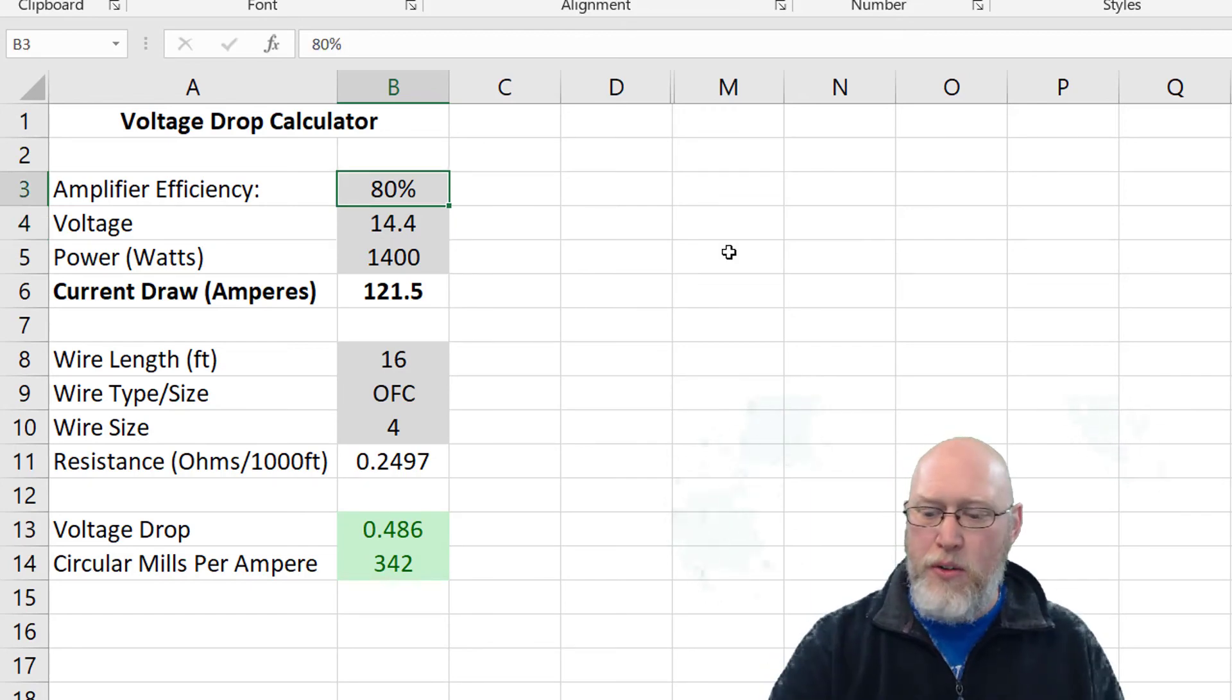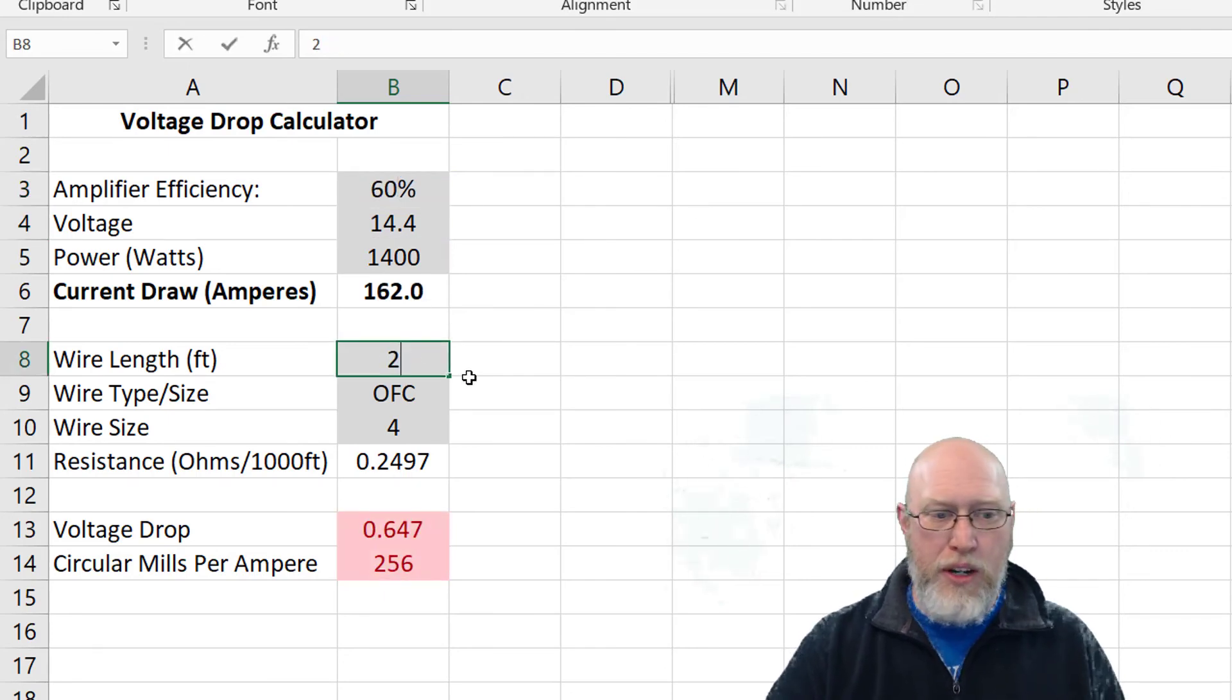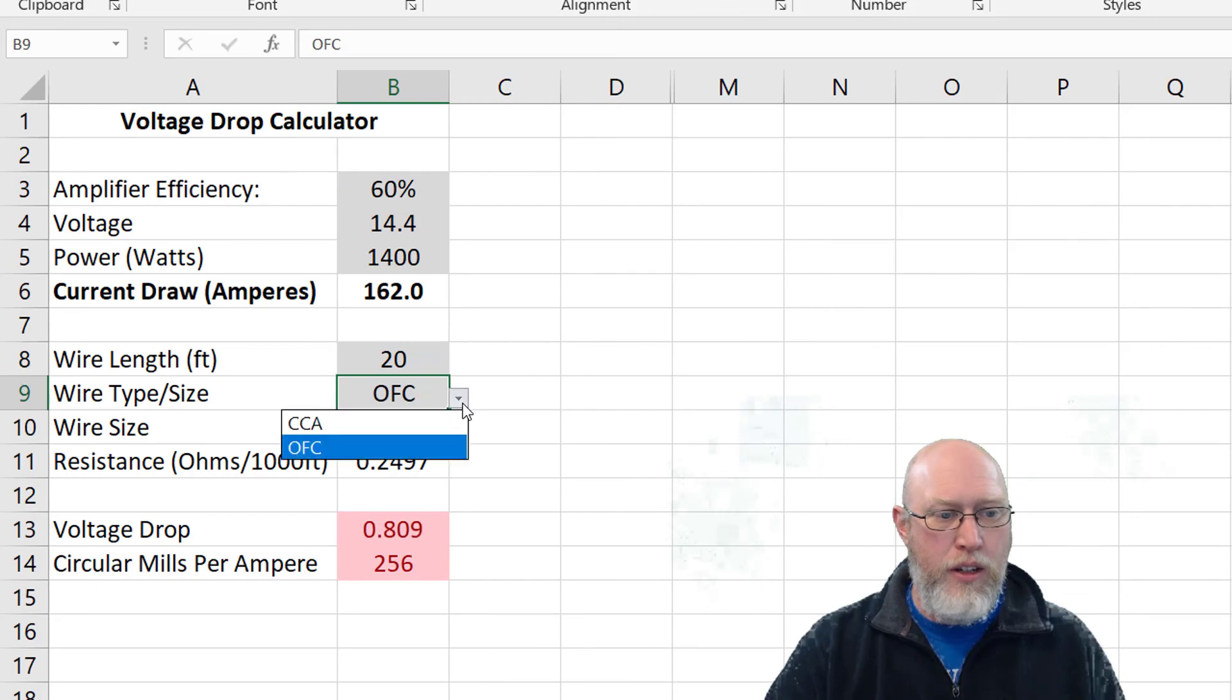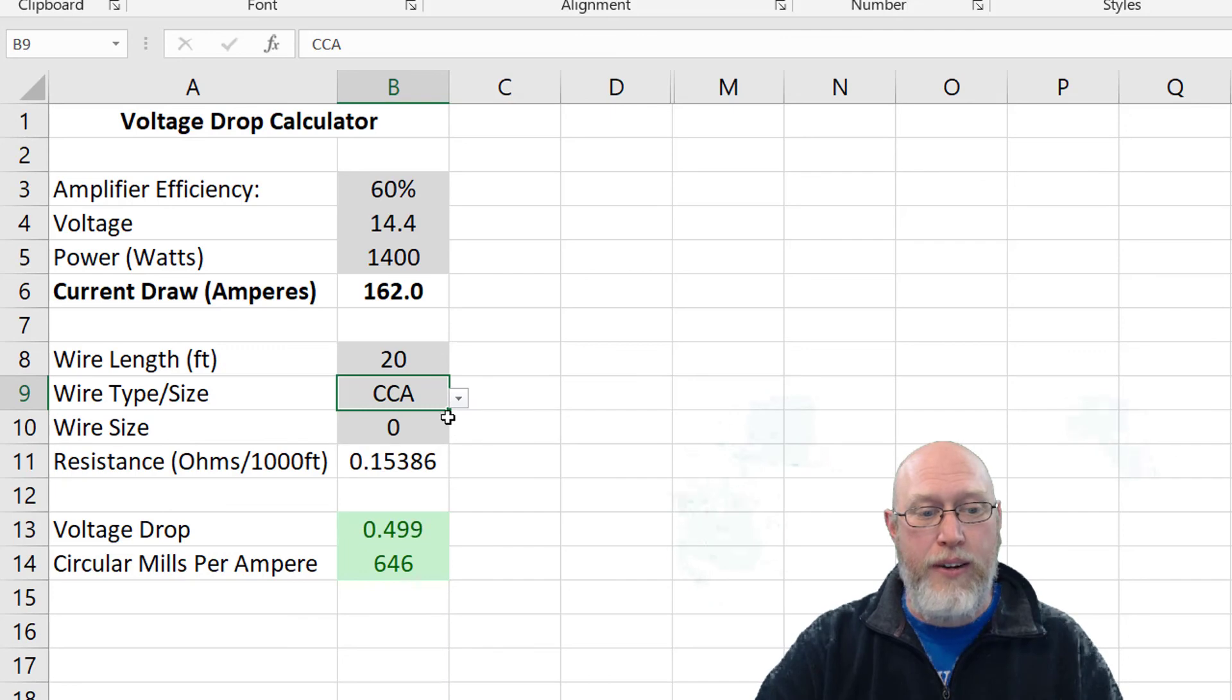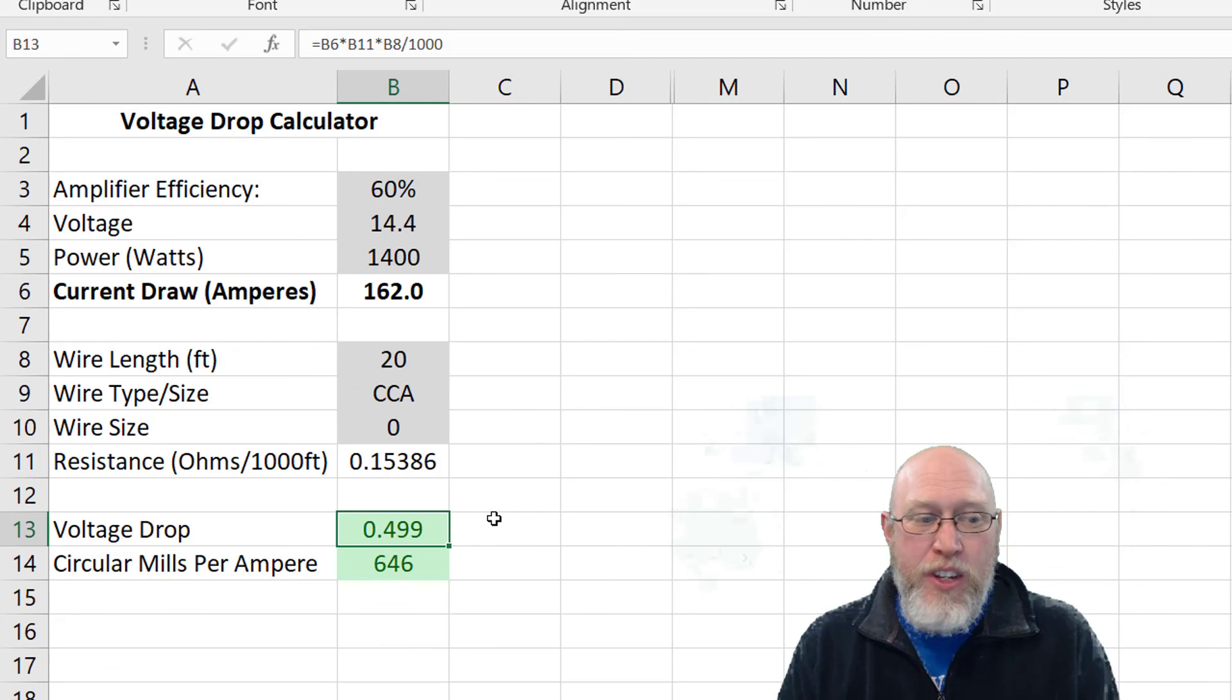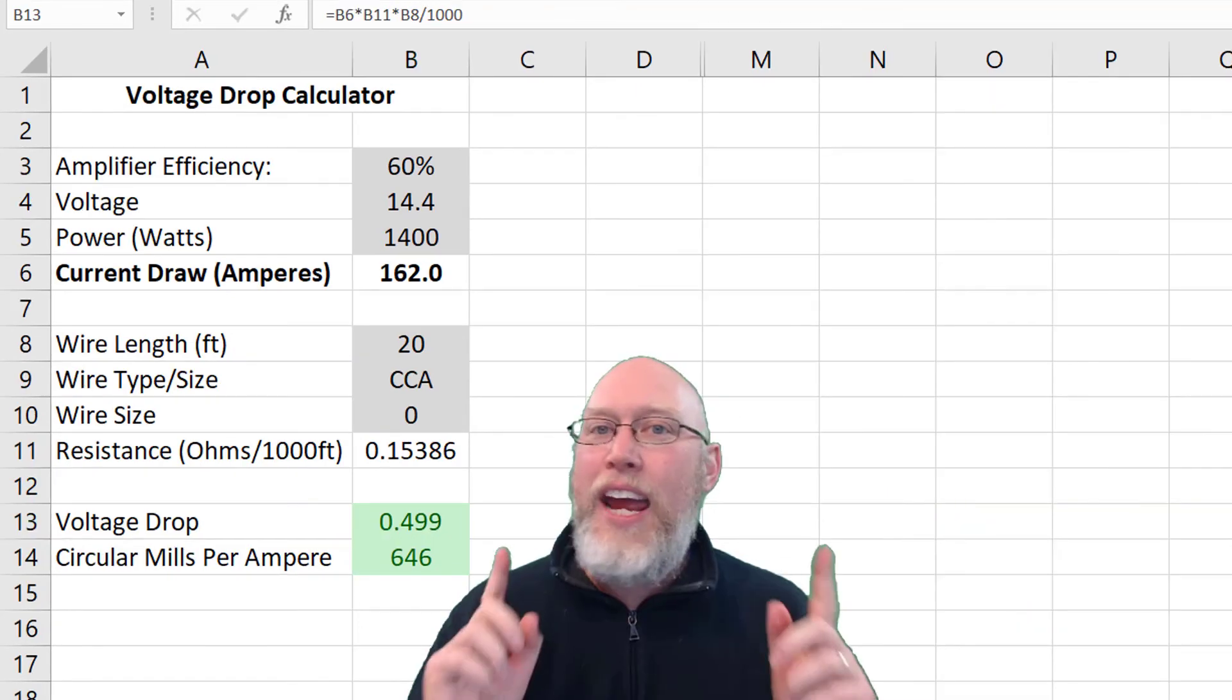Let's imagine we have a 60% efficiency amplifier, and we've got a 20 feet run of 0 gauge wire. Well that's going to work just fine. Both our readouts are in green. What happens if we switch it to CCA wire? Well look at that y'all. 0.499. So it's going to be right on the edge of our limit for CCA wire. And honestly if it's that close, I'm saying no deal because of all the other downsides that go with CCA wire.